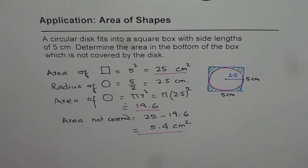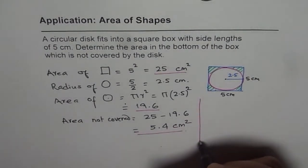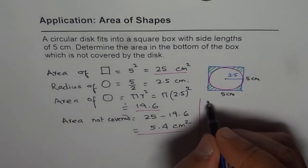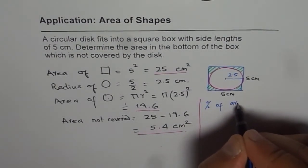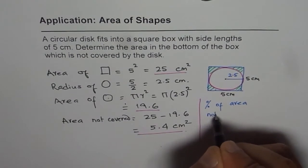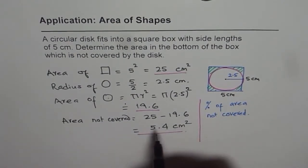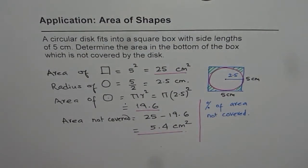That is how it should be done. As an additional problem, I suggest finding out the percent of area not covered. We have already found the area which is not covered - what percent of the area of the square is not covered? Figure that out. Thank you and all the best.